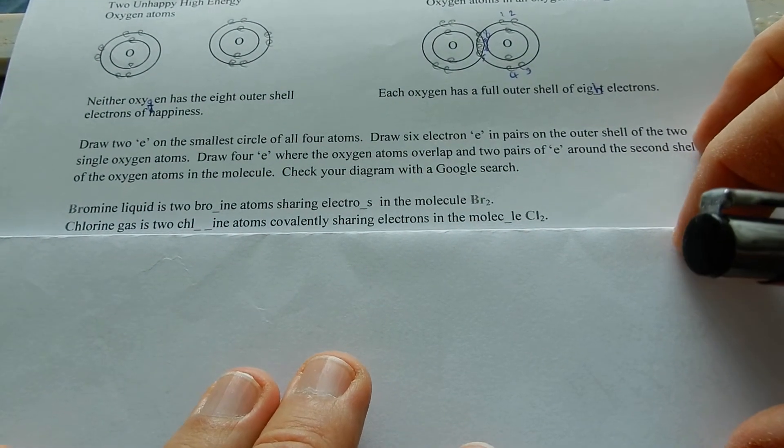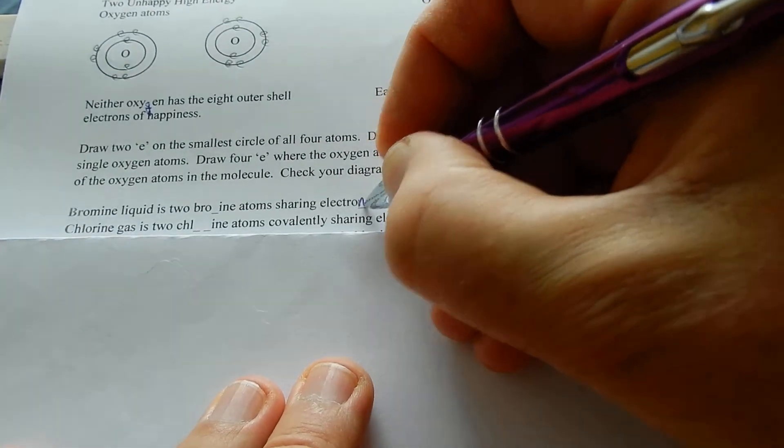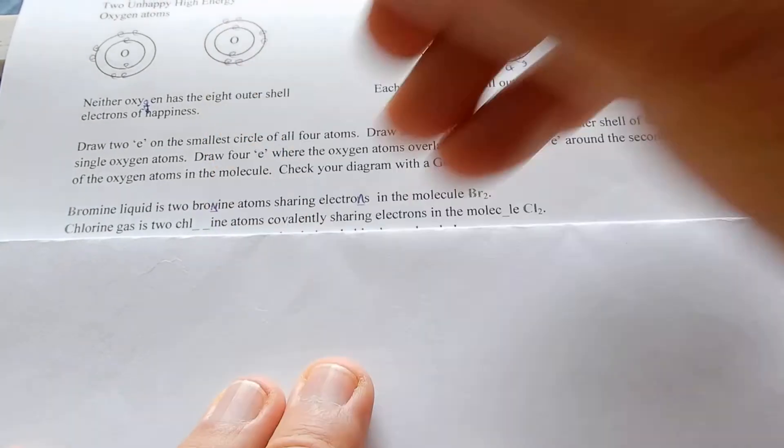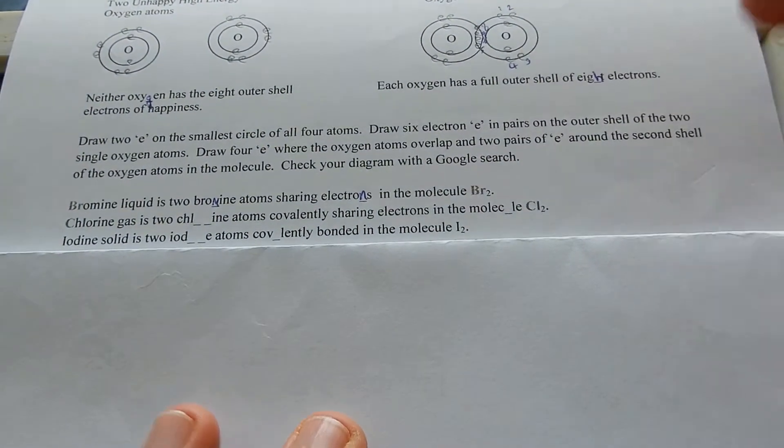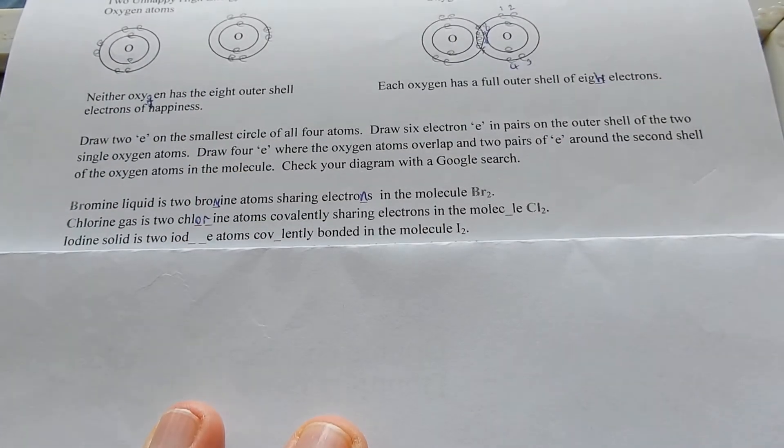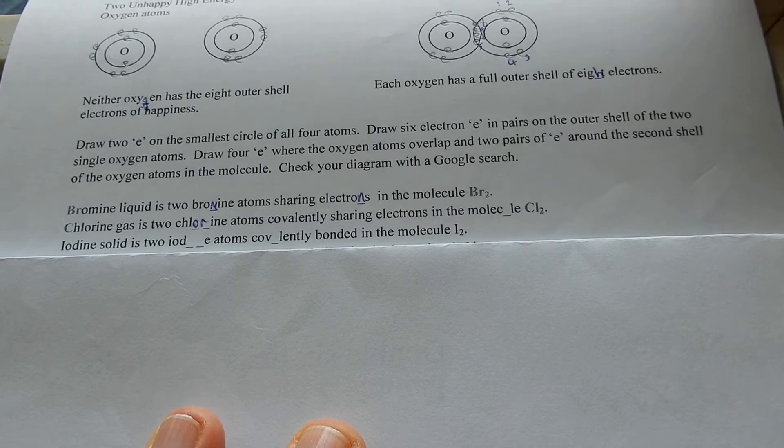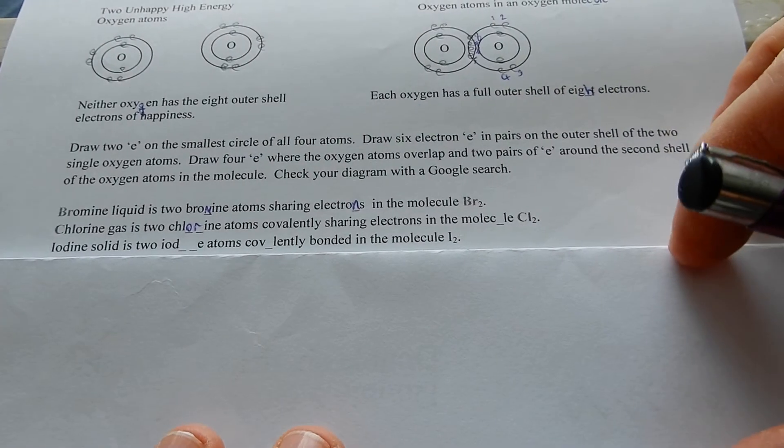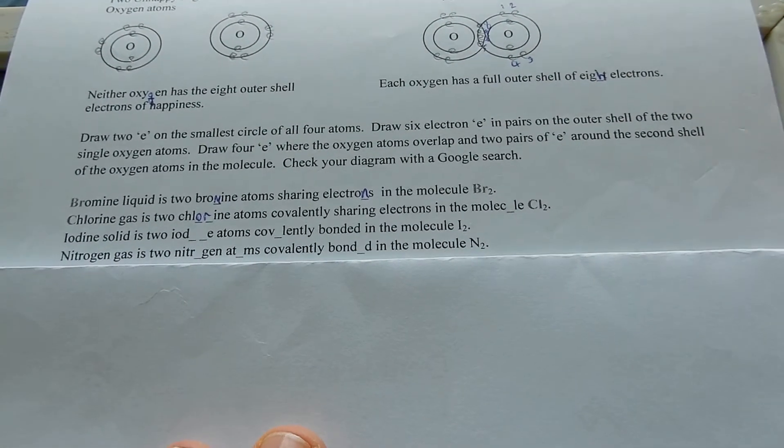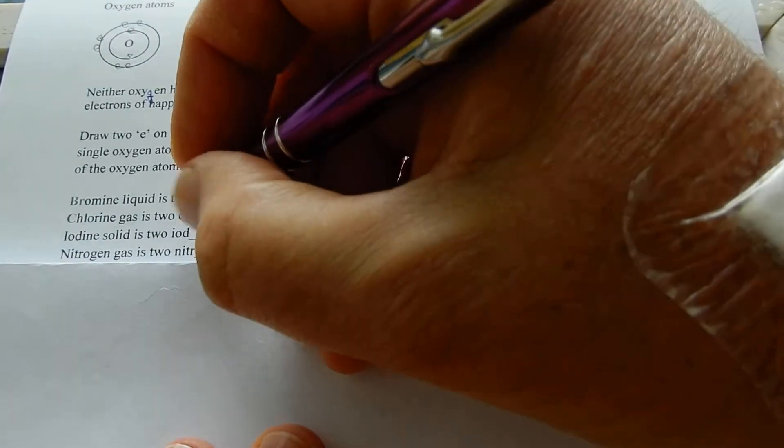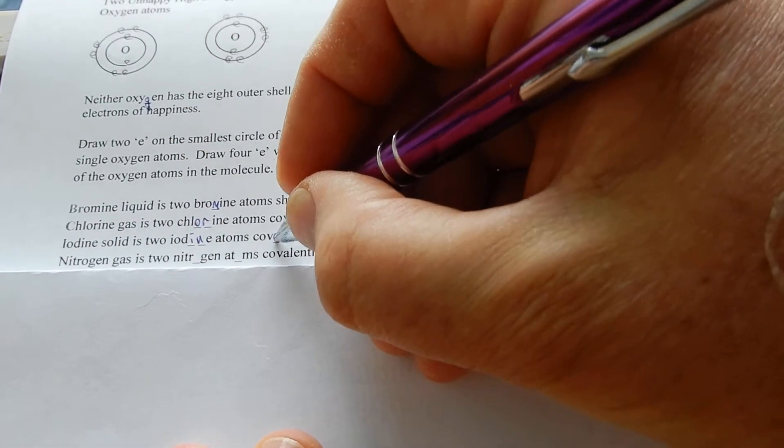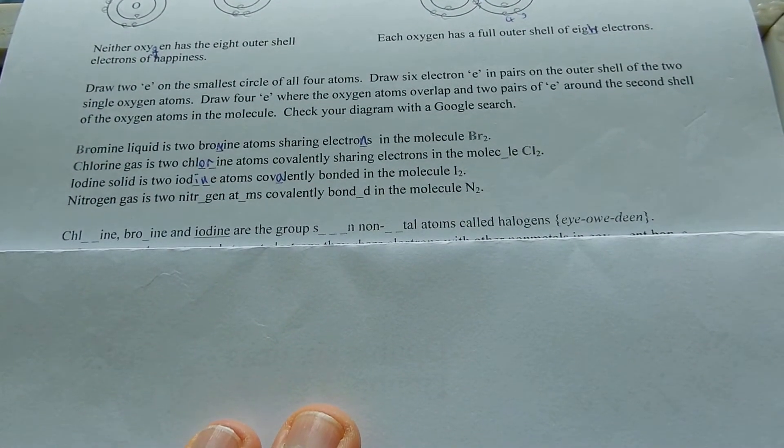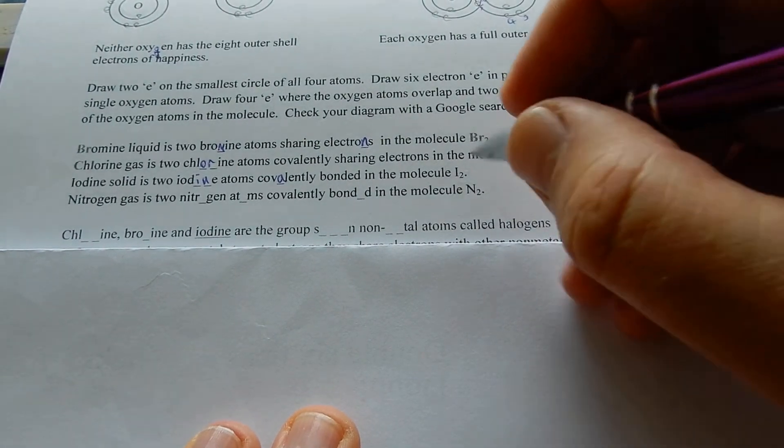Bromine liquid is two bromine atoms sharing electrons in a molecule Br2. Chlorine gas is two chlorine atoms covalently sharing electrons in a molecule Cl2. Iodine solid is two iodine atoms covalently bonded in the molecule I2. Nitrogen gas is two nitrogen atoms covalently bonded in the molecule N2.